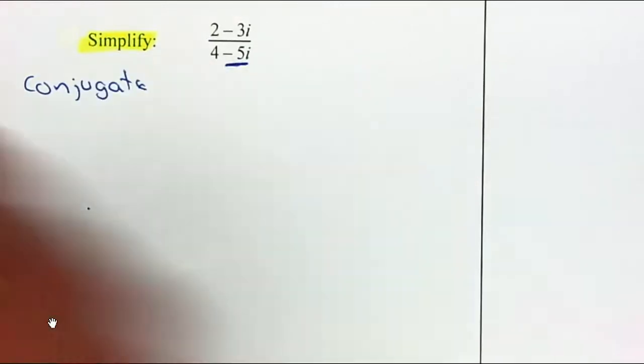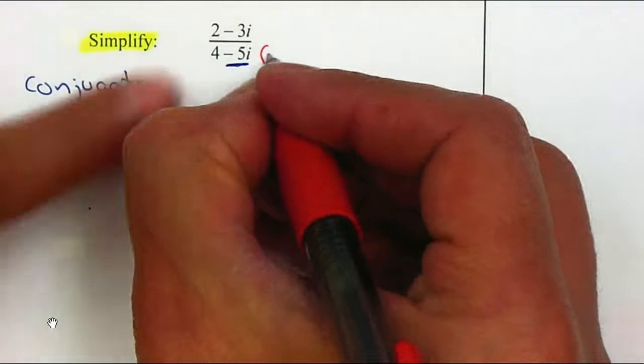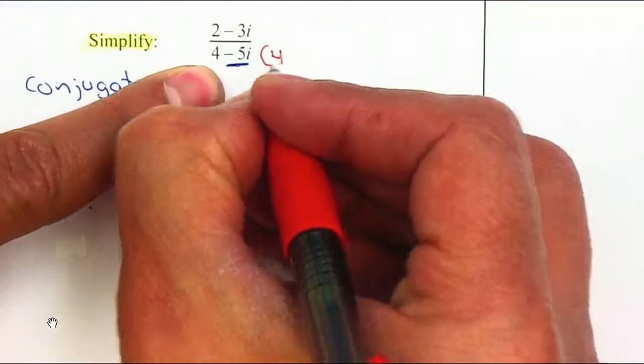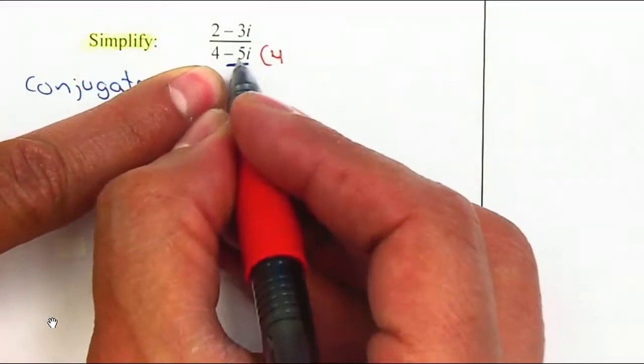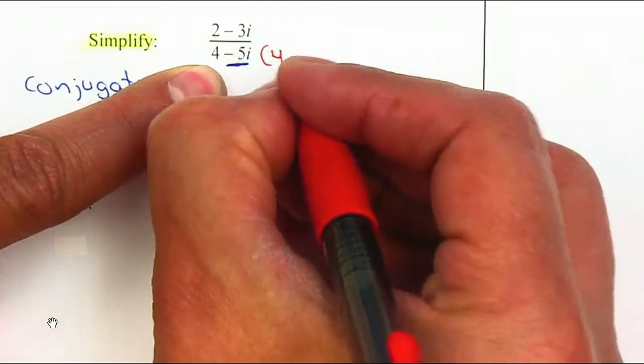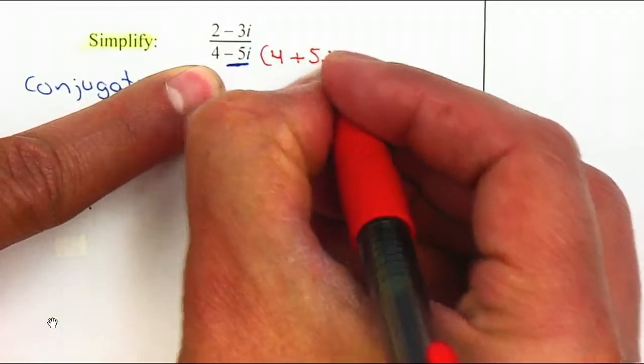I'm going to multiply by the conjugate, which in this case means the first number stays the same. The only thing that changes to the opposite is the imaginary part. That will be positive 5i.